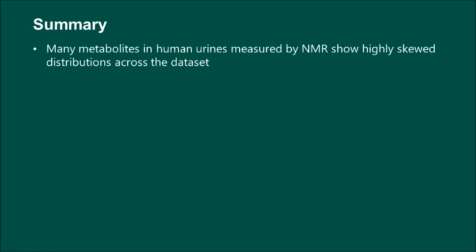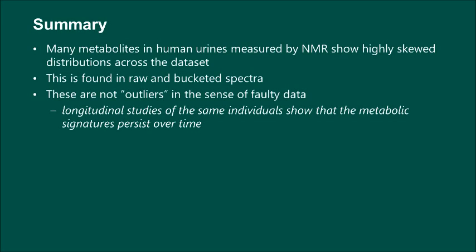We have found that the levels of metabolites in human urines, as measured by NMR, are highly skewed. Although not shown here, this is found in raw as well as bucketed spectra. The tails of the distributions are not caused by outliers in the sense of data that is faulty in some way. Longitudinal studies of the same individuals show that this pattern of skewness persists over time.